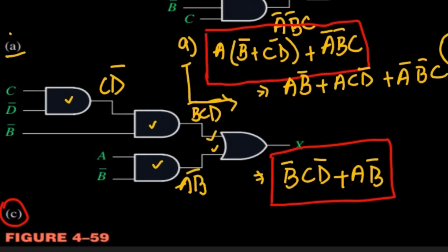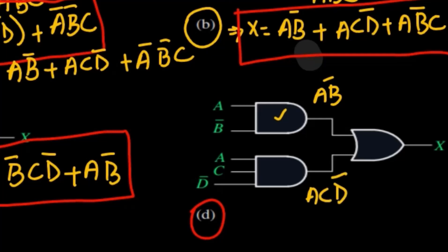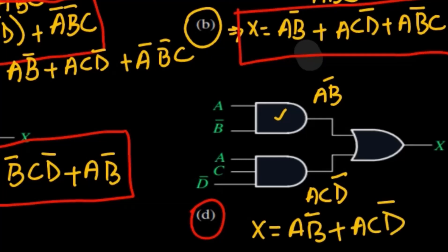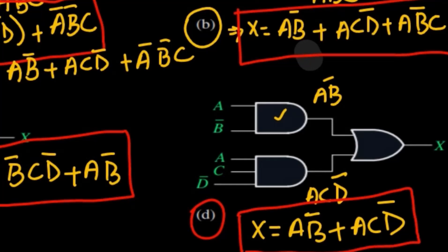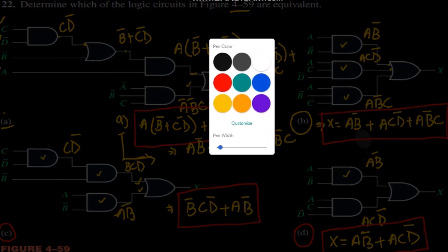For part D, the output of the first AND gate is A·B prime, and the second AND gate gives A·C·D prime. These two are applied to the OR gate, and the final expression for X is A·B prime + A·C·D prime. This cannot be further simplified.